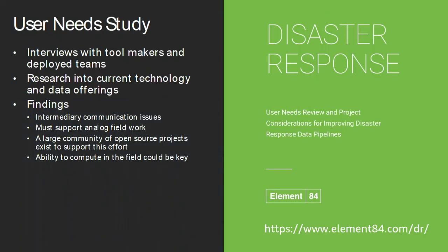We wanted to know what people actually deploying in the field needed, so we worked with Element 84 to do a user needs study. We talked to groups like American Red Cross, Humanitarian OpenStreetMap, Doctors Without Borders, and tool developers like OpenDroneMap and Mapillary. One key finding: people wanted access to data in the field, and being able to take compute into the field would likely be very helpful.